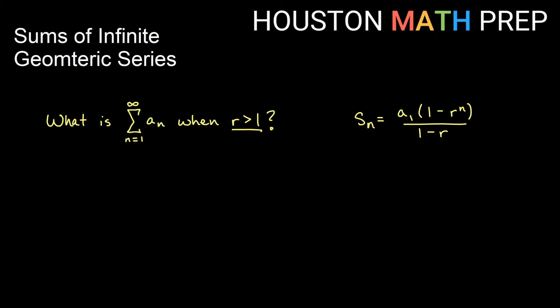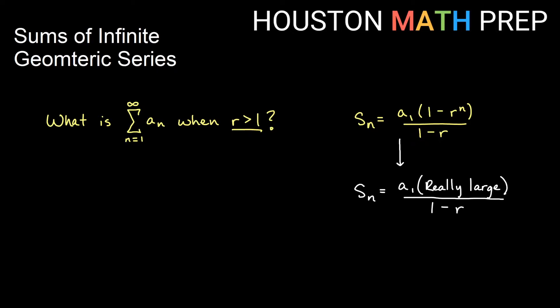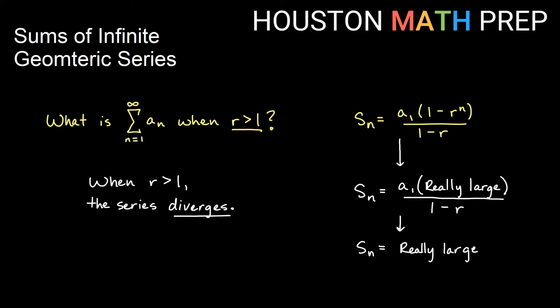The first thing we'll look at is what happens when we plug in a common ratio bigger than 1. If r is 2, imagine plugging in 2 and taking a bigger and bigger power of 2. We'd get a really, really big number — 1 minus a really big number — which is also just a really big negative number. So when r is bigger than 1, we get something really large on top, meaning the series diverges.